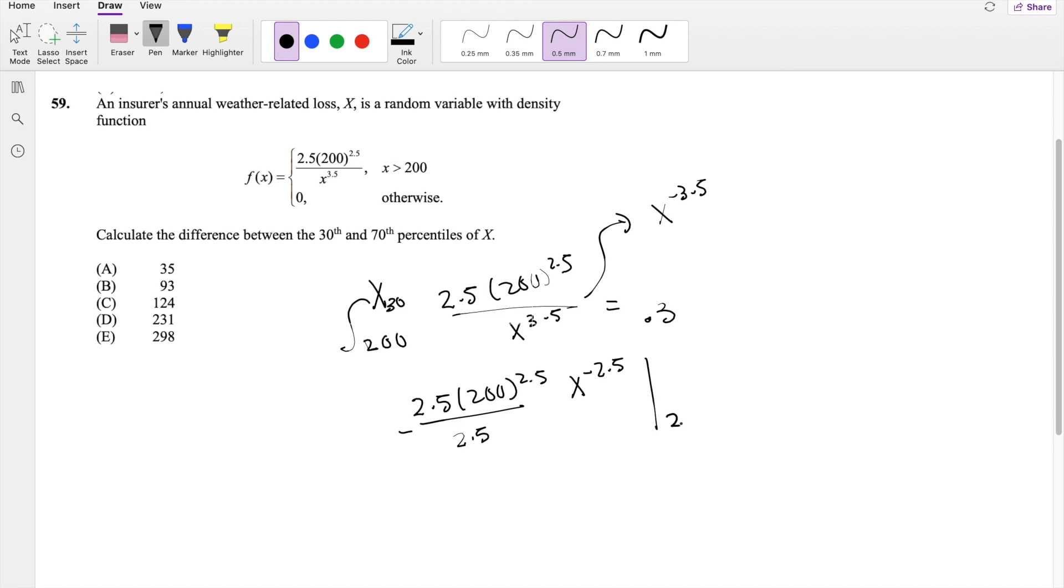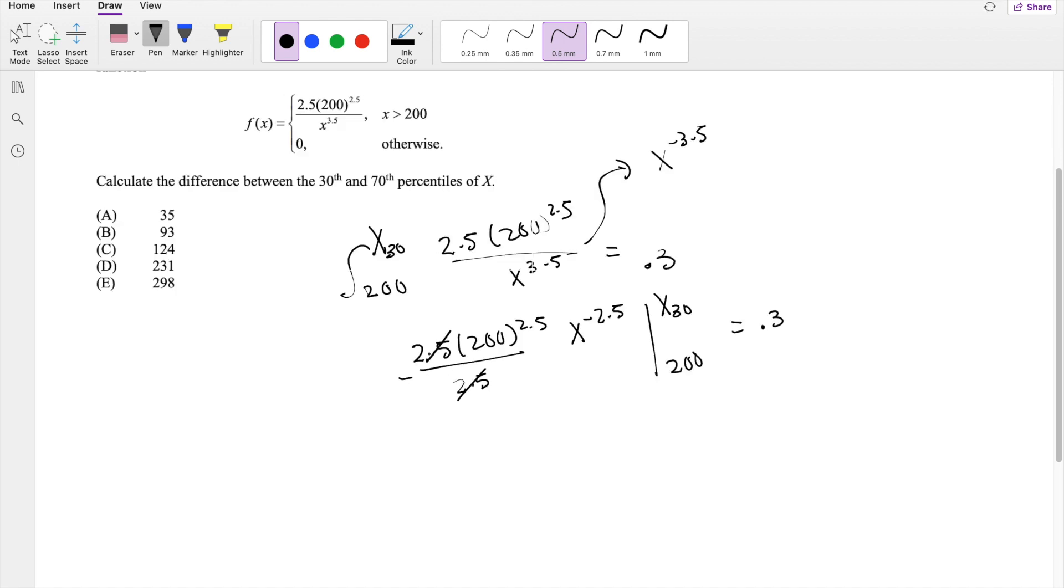Evaluating this from 200 to X_30 and this is equal to 0.3. So this actually cancels out here. Putting in the upper limit, you get negative 200 to the 2.5, X_30 to the negative 2.5.